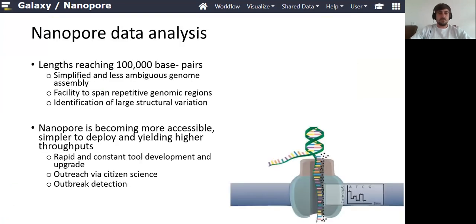A short introduction on nanopore sequencing: nanopore sequencing creates long-read sequences of up to 100,000 base pairs. This makes it easier to assemble whole genomes. Another advantage is that it can span long repetitive genomic regions and makes it easier to identify large structural variations.